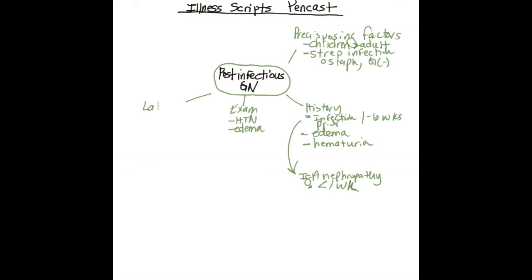Lab findings will also provide you with complement levels to help clinch the diagnosis. In post-infectious GN, C3 is low, C4 is usually normal. C3 is part of the classical and alternative complement pathways, but C4 is only part of the classical pathway, which is not activated in post-infectious GN.